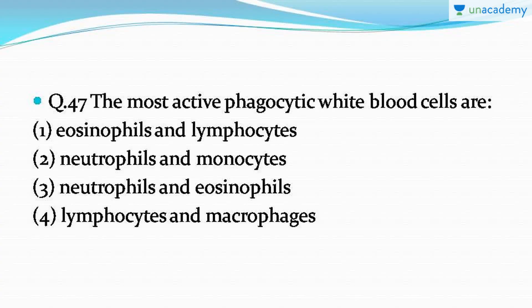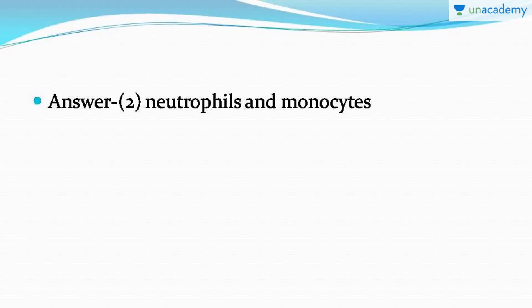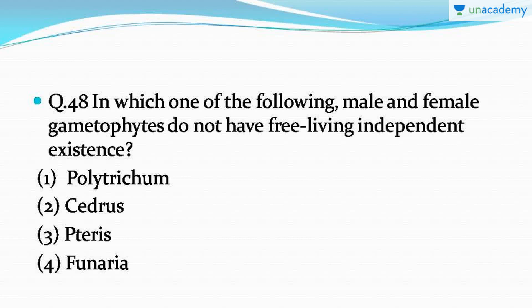Next question: the most active phagocytic white blood cells are — choose which of the following are the most active phagocytic white blood cells. This is the type of question where you have to remember the answer. The correct answer is option number two: neutrophils and monocytes are the most active phagocytic white blood cells.